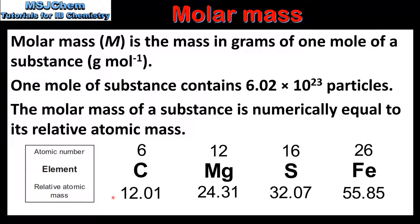Here we can see the relative atomic masses of carbon, magnesium, sulfur and iron. As mentioned previously, the molar mass is numerically equal to the relative atomic mass. However they are not the same. One difference is that the relative atomic mass is dimensionless — it has no units — whereas molar mass has units of grams per mole. In the next slide we look at how to convert from relative atomic mass to molar mass.